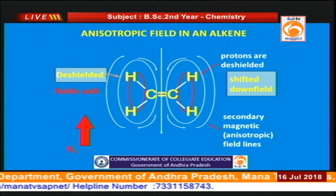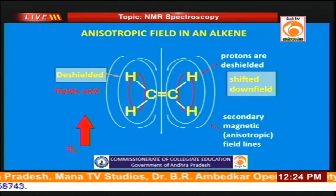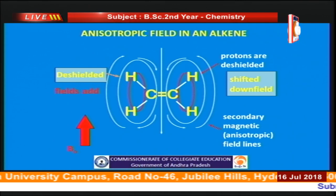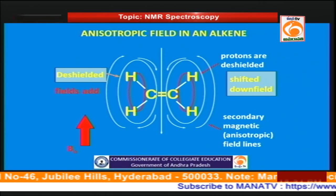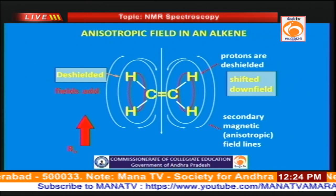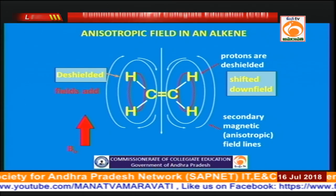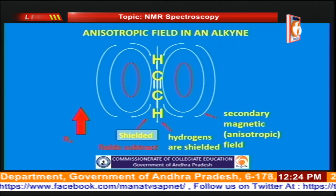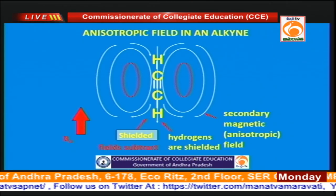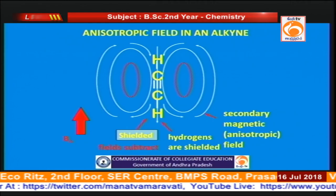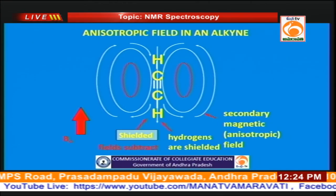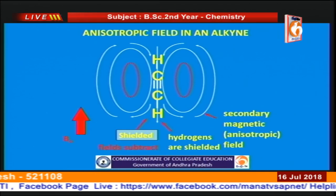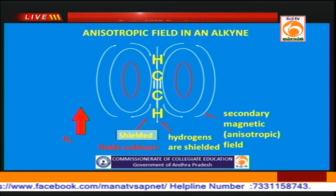The same effect is found in alkenes. In alkenes there is one π bond and the π electrons undergo circulation, generating an induced magnetic field that is paramagnetic in certain regions and diamagnetic in others. The alkene protons are in the deshielding (paramagnetic) region, so the δ value is more. Whereas in alkynes, the alkyne protons are in the diamagnetic (shielding) region. Therefore, comparing the δ values of alkenes and alkynes, alkynes have a lower δ value because their protons are in the shielded region.